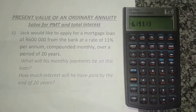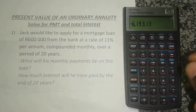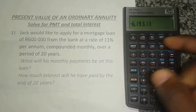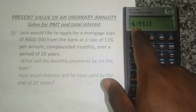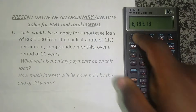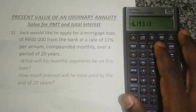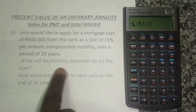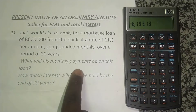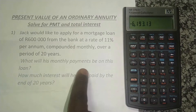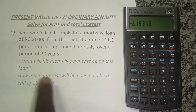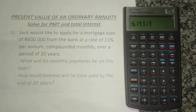His monthly payment for the next 20 years, or the next 240 months, is 6,193.13. So we've answered the first question: what will his monthly payments be on this loan?